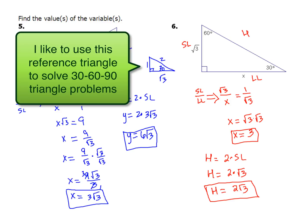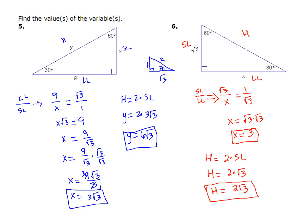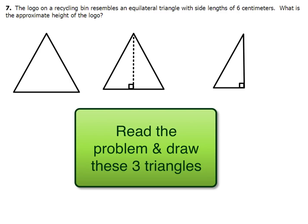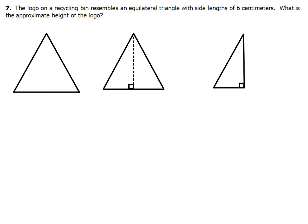That's it for examples 5 and 6. I like to use the reference triangle — drawn there in blue in the middle — to help me see things. Now, no class would be complete without its very own word problem. Example number 7: read the problem and draw these three triangles, then come back and let's see what we got. One of the things we're told is that we've got an equilateral triangle, and each one of those sides is 6 centimeters. I'm going to mark that around the first triangle — each side is 6 centimeters. About equilateral triangles: each one of the angles is 60 degrees.